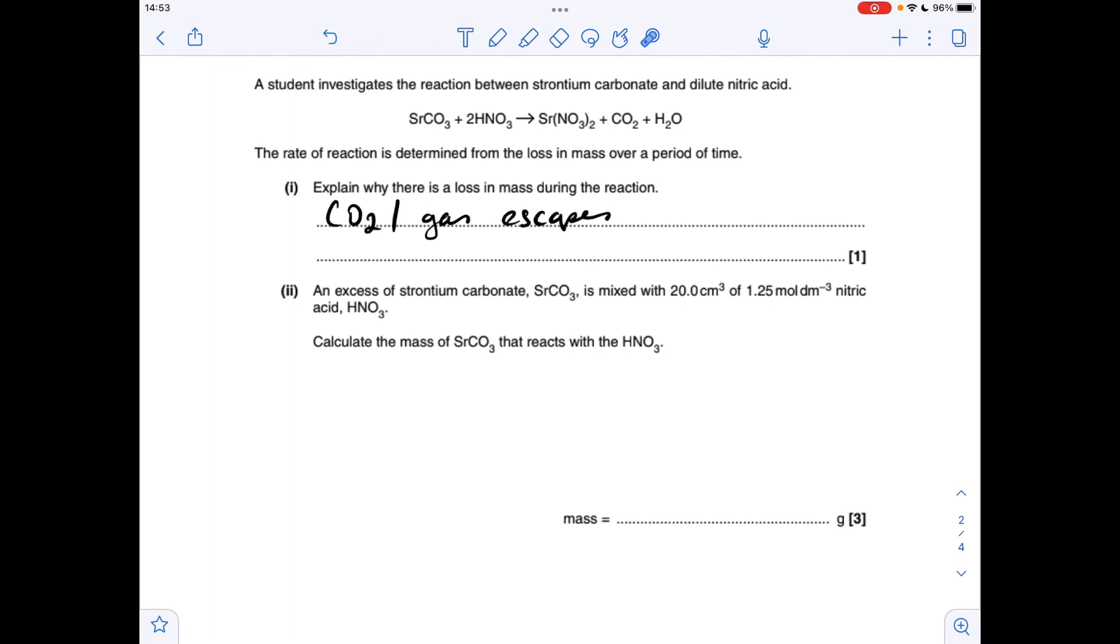Moving on to the calculations, so the first thing I'm going to do is work out how many moles of nitric acid is being used. Concentration times volume, just make sure that your volume is in decimeters cubed, so 20 cm cubed is 0.02 decimeters cubed.